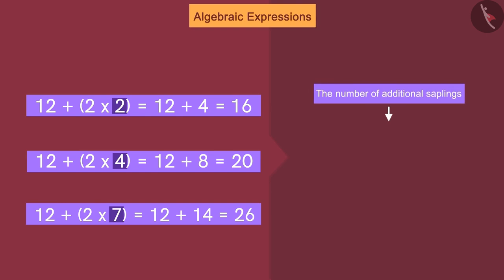Now, if we replace the number of extra saplings with letter x, we will get this. x is the number of additional saplings planted. We know that here x is called a variable.